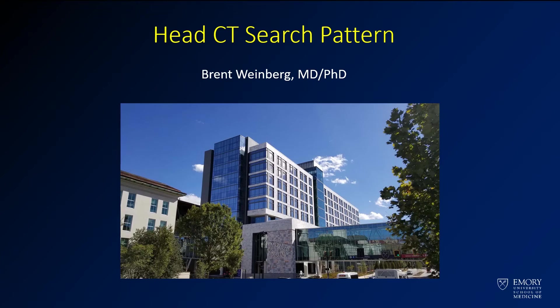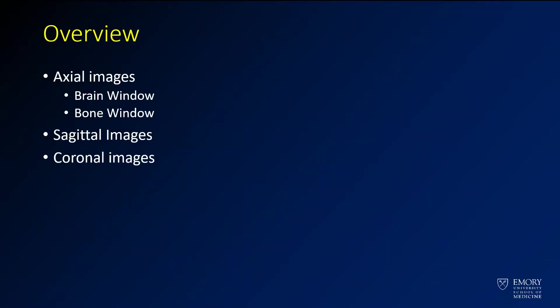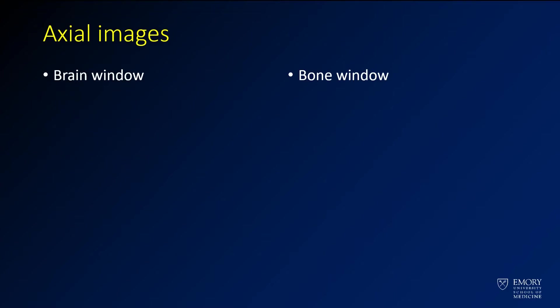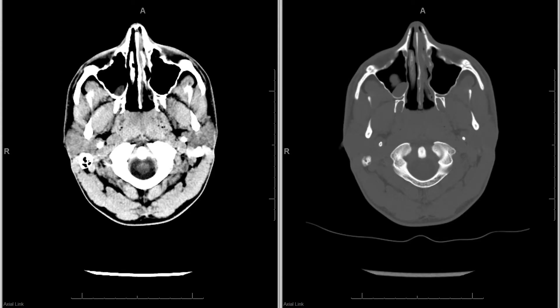Hi, I want to welcome everyone to the channel here today. We're going to be talking about a general search pattern for head CT. I'll go through some images with you to show you a general systematic way you might look at images. We'll start by looking at some axial images in both brain and bone window, then take a look at some reconstructions — sagittal and coronal images — that you often have available on CT scans.